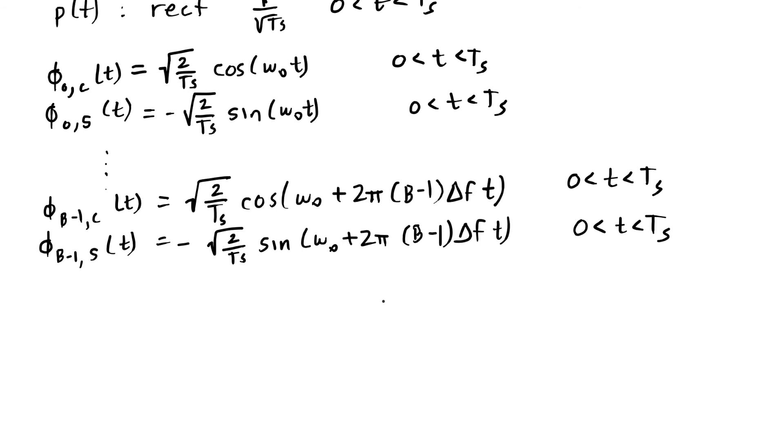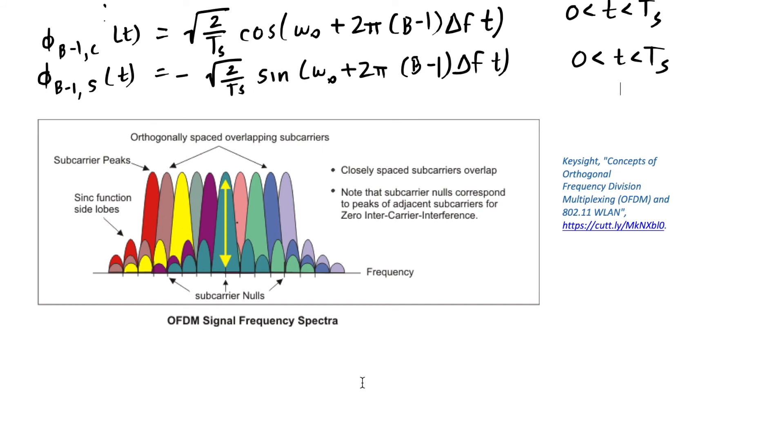So first, let's look at this OFDM signal in the frequency domain. I'm borrowing a picture from Keysight's website of OFDM, and it shows that each subcarrier, for example this red subcarrier, has a rect function in the time domain which ends up having these sidelobes in the frequency domain that overlap with other subcarriers. You can see that overlap in this picture here.